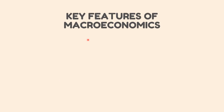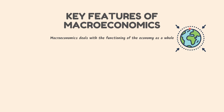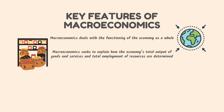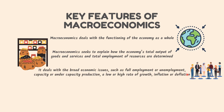Some key features of macroeconomics are: Macroeconomics deals with the functioning of the economy as a whole. For example, macroeconomics seeks to explain how the economy's total output of goods and services and total employment of resources are determined, and what explains the fluctuation in the level of output and employment. It deals with broad economic issues such as full employment or unemployment, capacity or undercapacity production, a low or high rate of growth, and inflation or deflation.